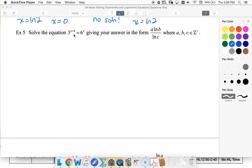Alright, so 3 to the x plus 4 equals 6 to the x. The first thing I'm going to do is separate out my 3 to the x plus 4. I'm going to call that 3 to the x times 3 to the 4 equals 6 to the x. I want all my x's on the same side of the equation, so I'm going to divide both sides by 3 to the x.